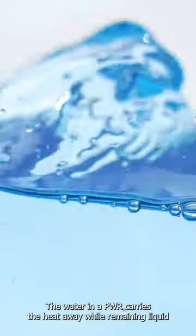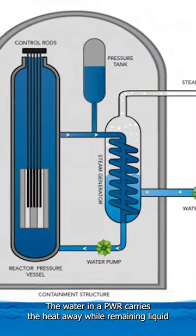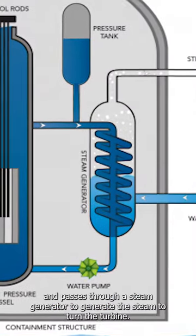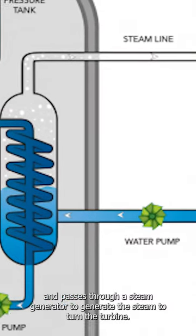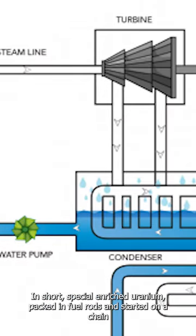The water in a PWR carries the heat away while remaining liquid and passes through a steam generator to generate the steam to turn the turbine.